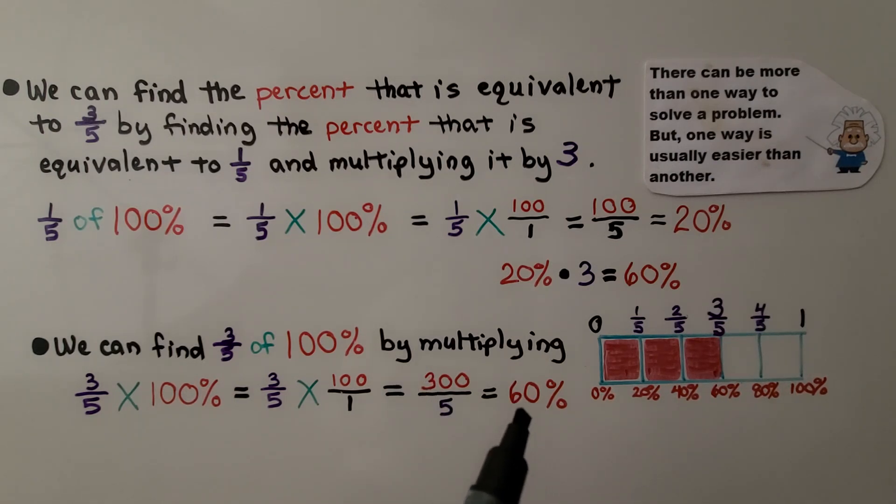So here's 1 fifth. That's 20%. Here's 2 fifths. That's 40%. And 3 fifths is 60%. Either way, we'll get the same answer. We'll get the correct answer.